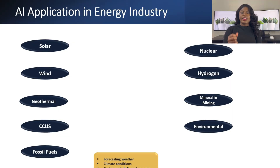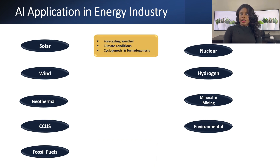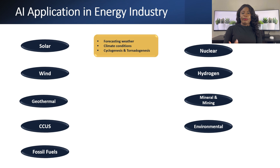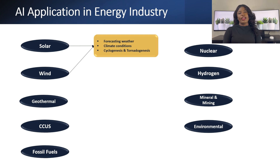The first application is forecasting weather and climatic conditions. This is applicable in the solar and wind industries. As you're aware, we need sun for solar energy and wind for wind energy, so we need to predict when we have those conditions.